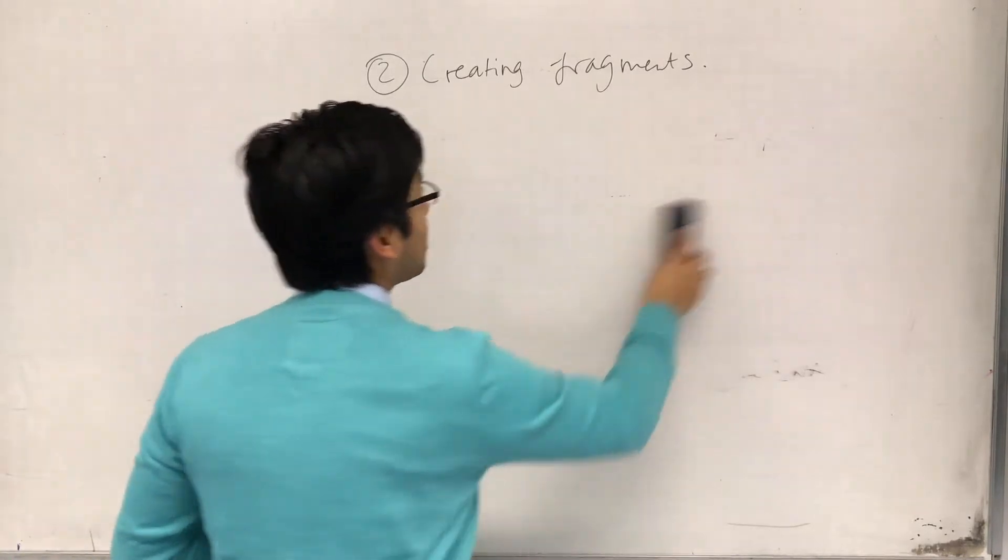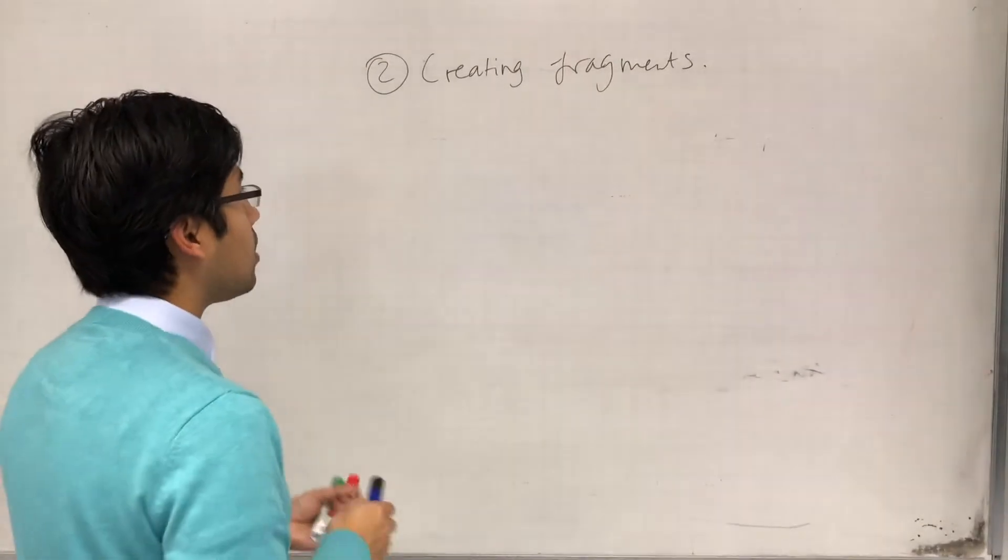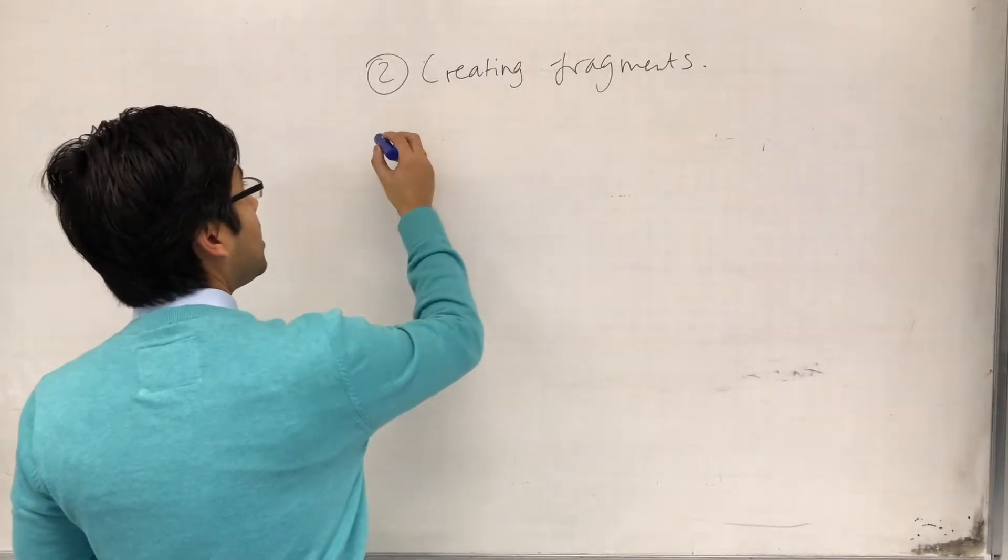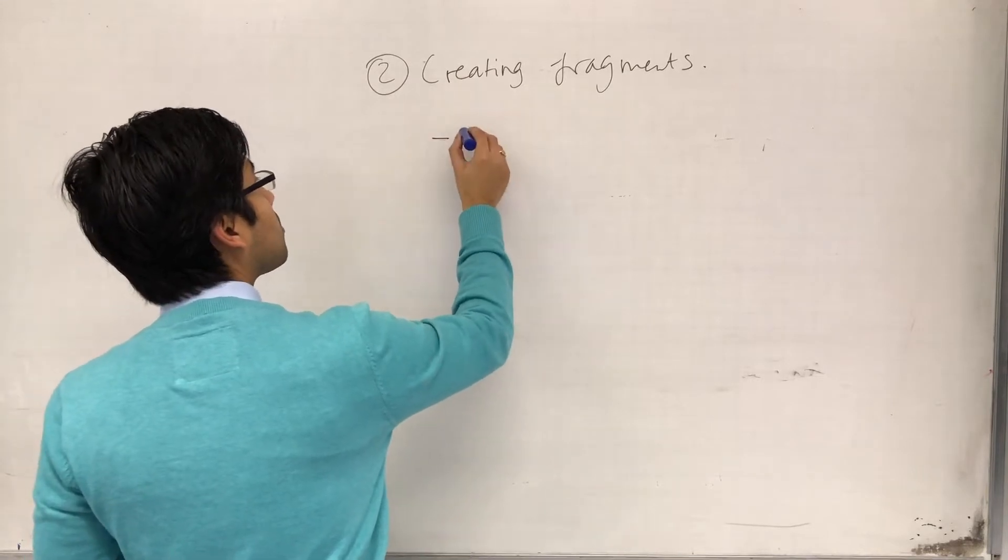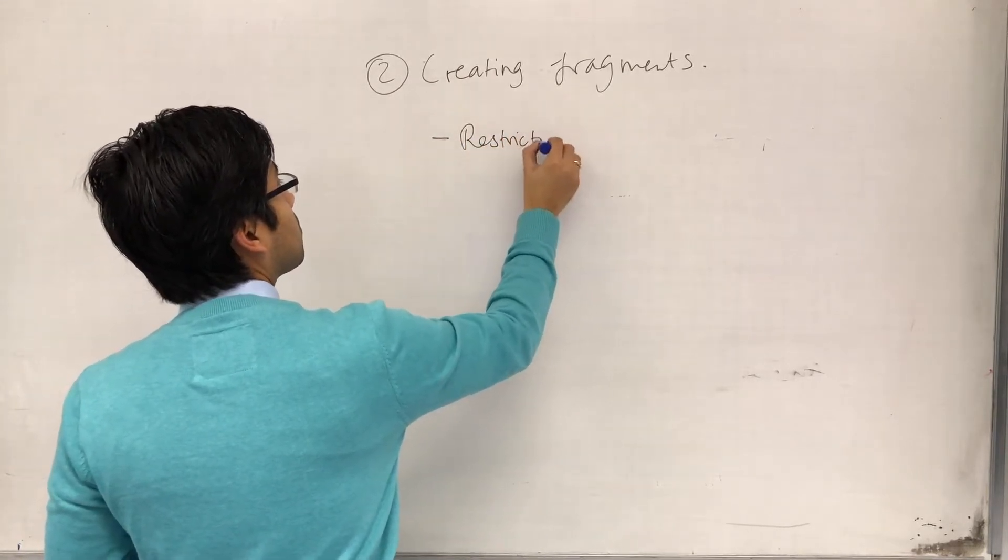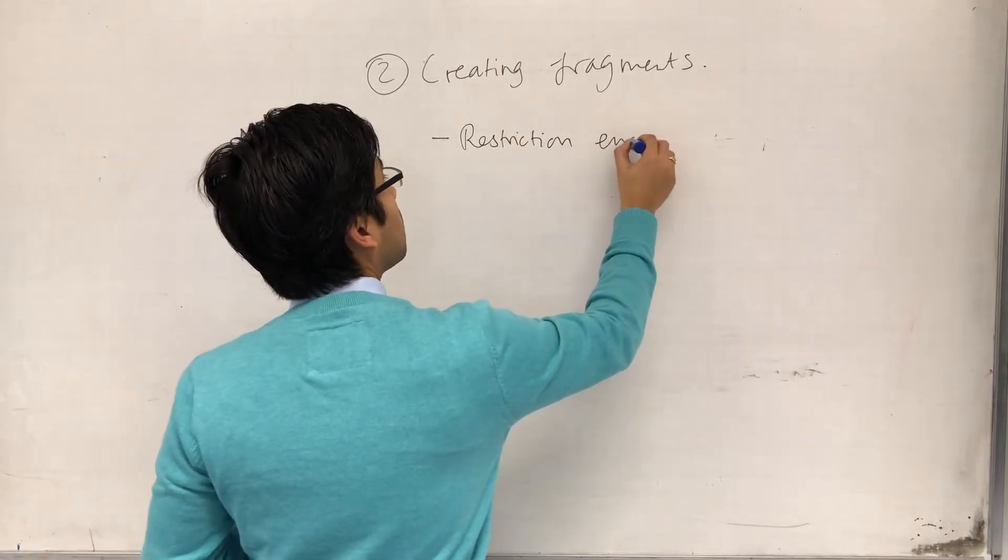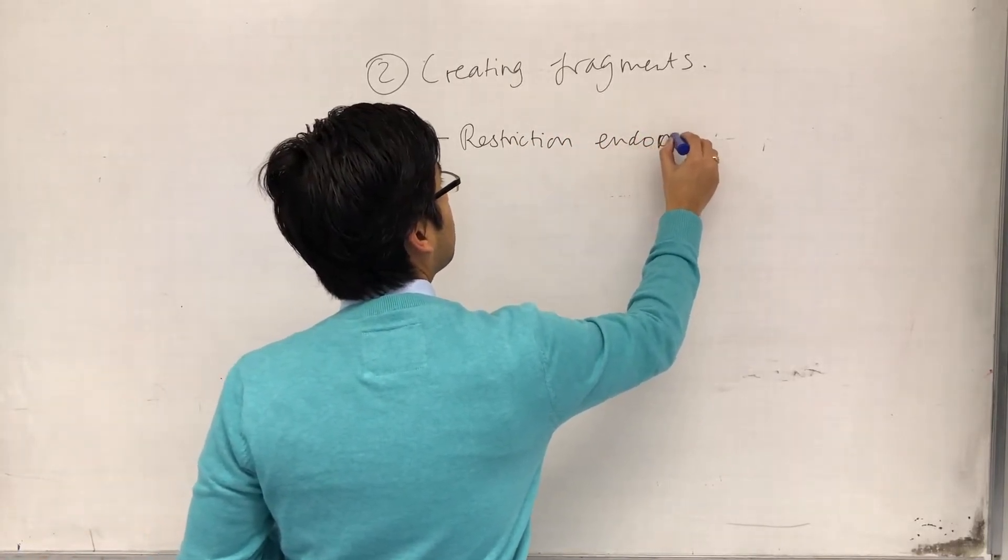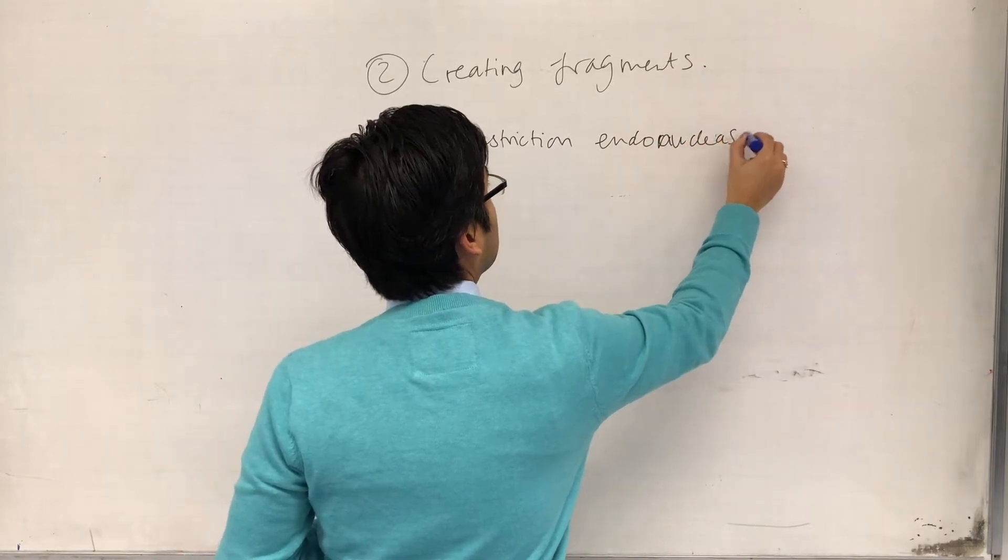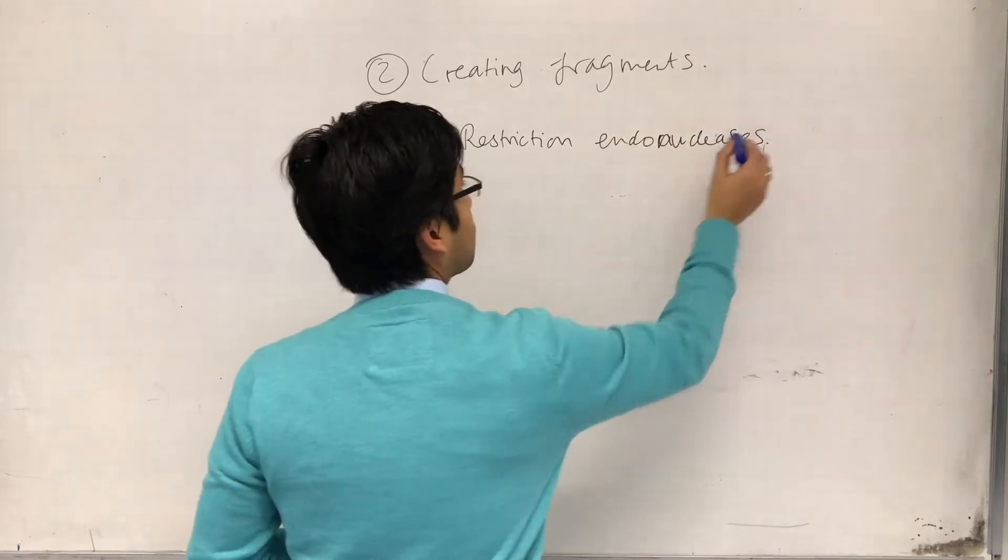But how do we chop DNA? DNA is chopped using enzymes. In particular, restriction endonucleases.